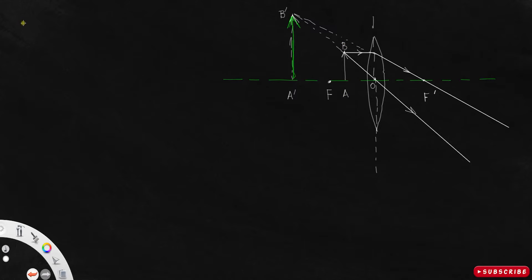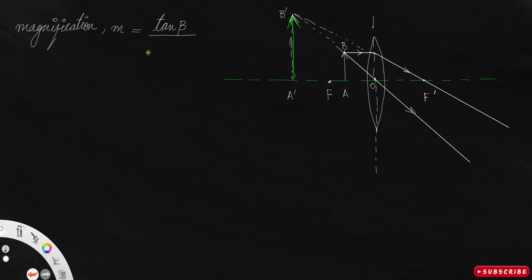By definition we have magnification M equal to tan β divided by tan α. Beta is the angle subtended by the image at the optic center, or at the eye, since we usually view this image from there. So tan β stands for the angle subtended by the image at the optic center.